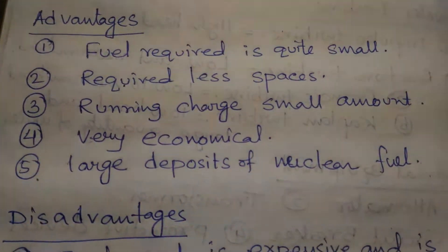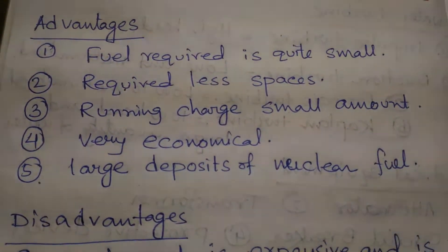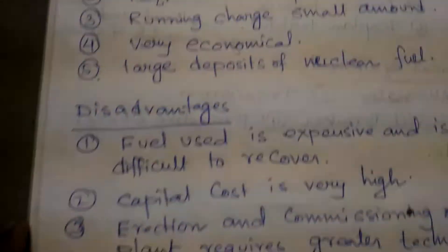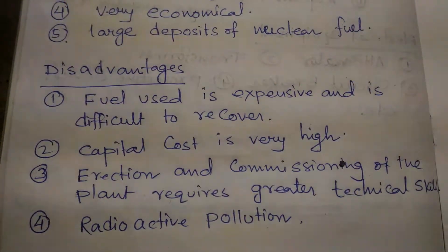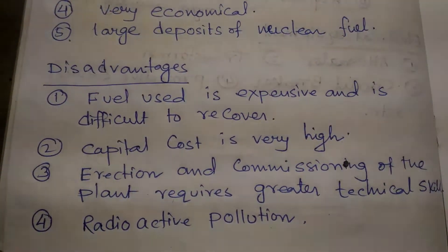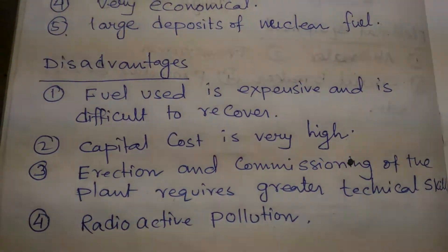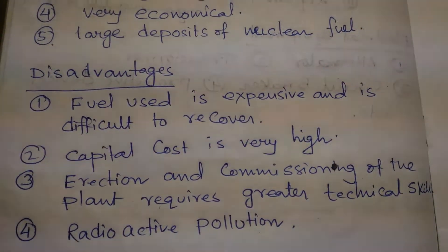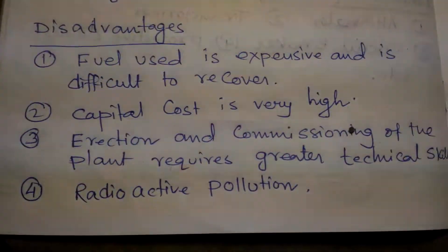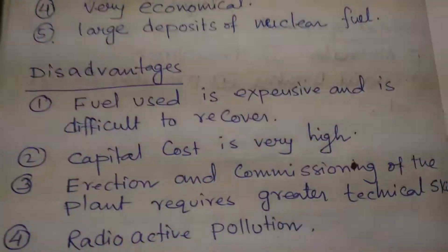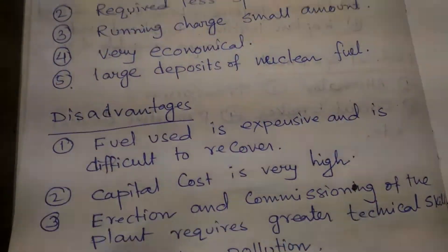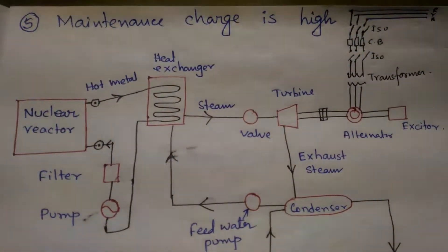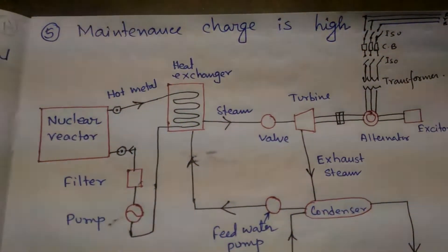Such a plant can ensure the continued supply of electrical energy for thousands of years. The disadvantages related to this plant are: the fuel used is expensive and difficult to recover, capital cost is very high, erection and commissioning of the plant requires greater technical skilled persons, there is radioactive pollution, and maintenance charges of this running power plant are very high.